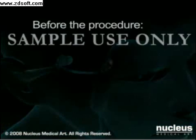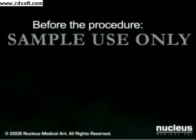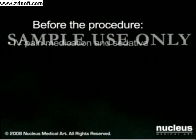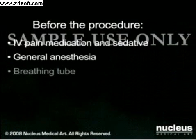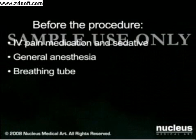When you arrive at the hospital for your procedure, an intravenous line will be started and you may be given a sedative to help you relax. Most cases are done under general anesthesia, which will put you to sleep for the duration of the operation. A breathing tube will be temporarily inserted through your mouth and into your throat to help you breathe during the operation. Tonsillectomies and adenoidectomies are rarely done under local anesthesia in adults and never in children.